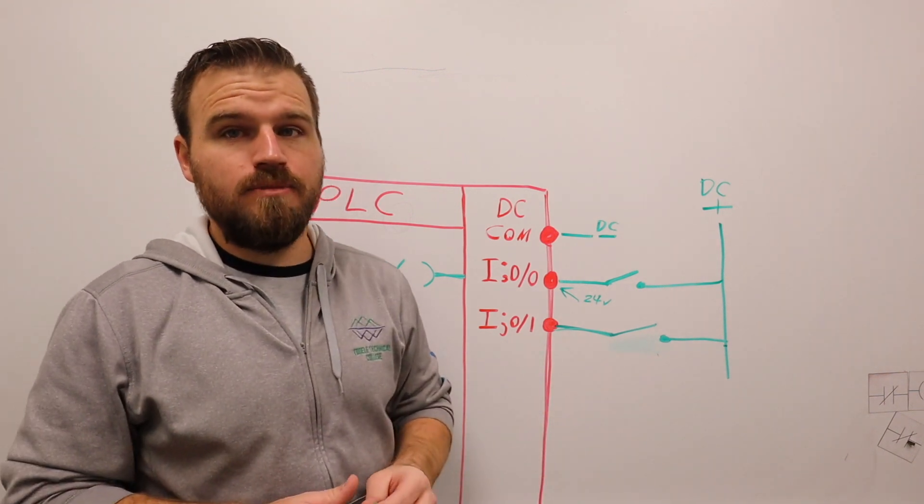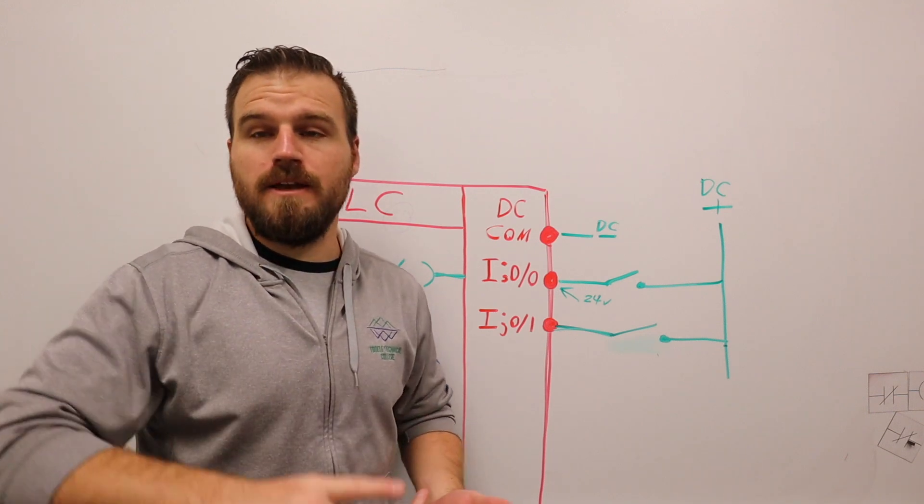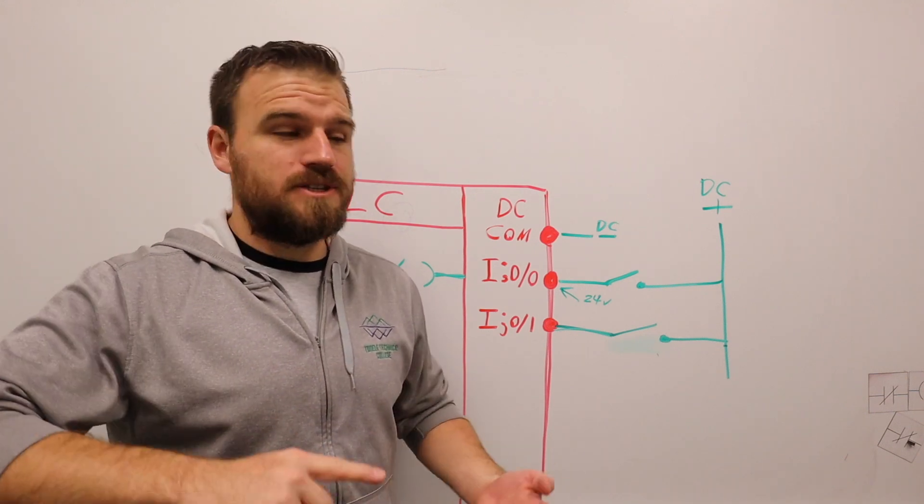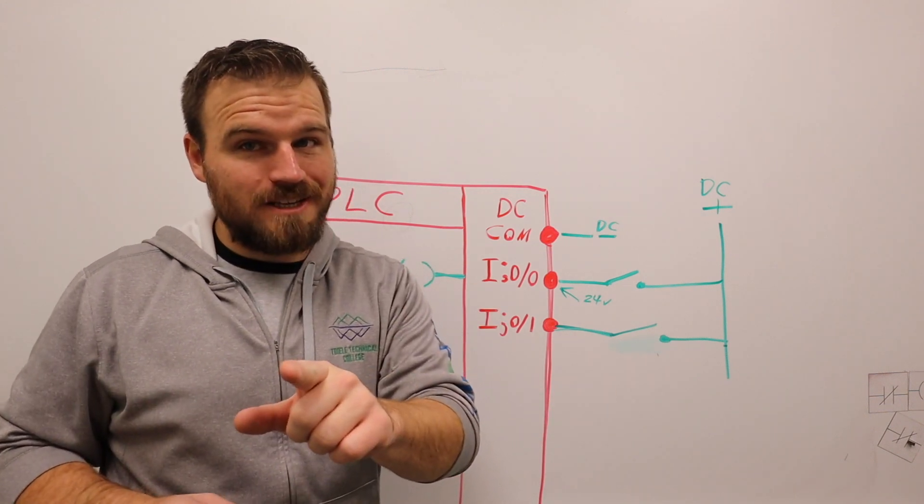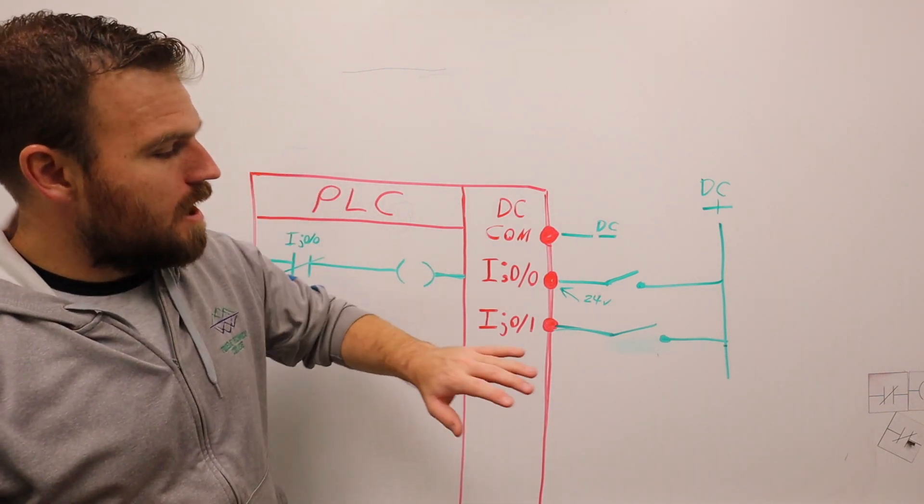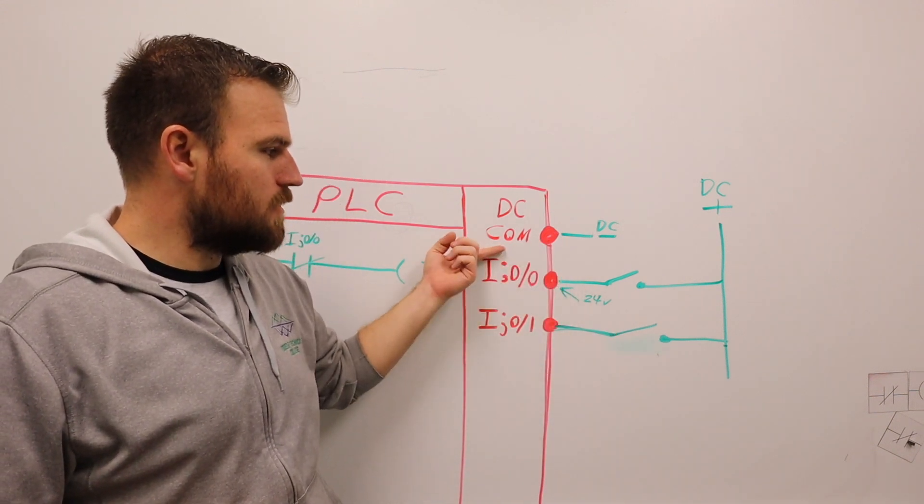Now we remember that inputs are always something that is a switching mechanism. It could be a push button, it could be a sensor, it could be a limit switch, it could be a door switch, it could be anything. Only thing it can't be is an e-stop. Remember that.